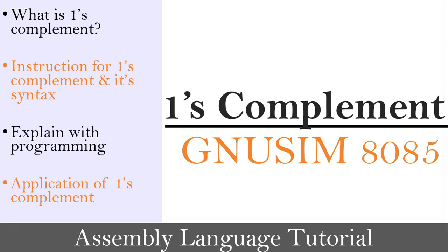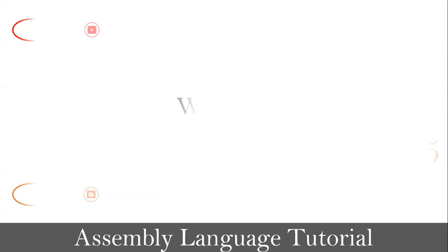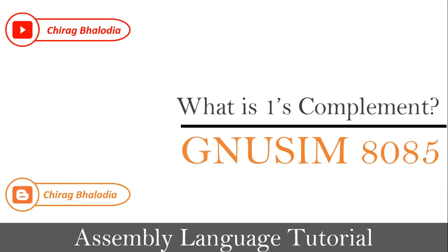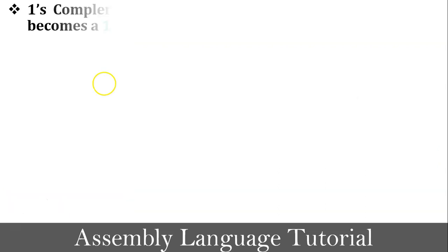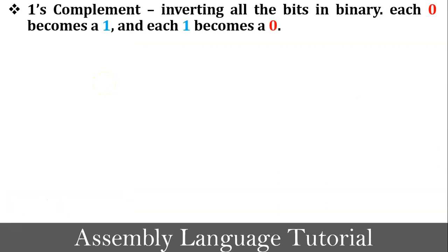Let's start with the first topic: what is one's complement in microprocessor 8085? One's complement means inverting all the bits in binary, so each 0 becomes 1 and each 1 becomes 0. That is called one's complement.